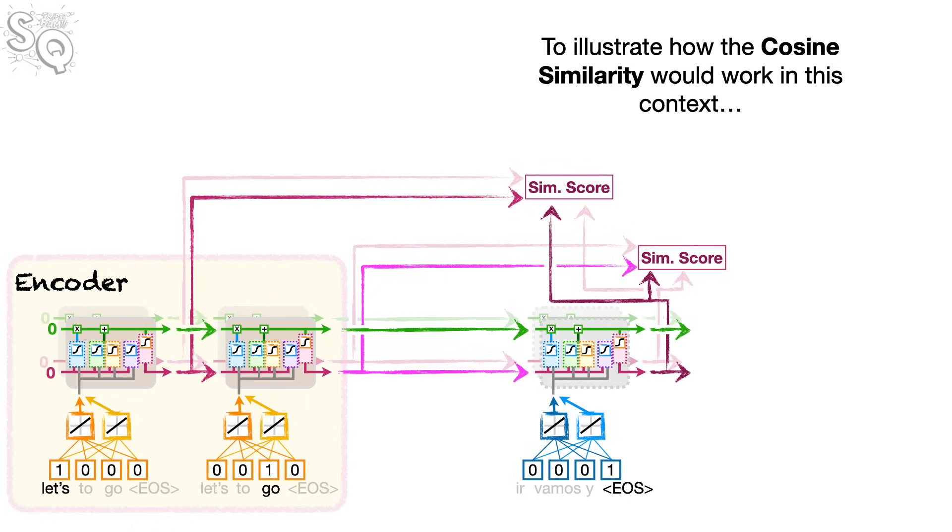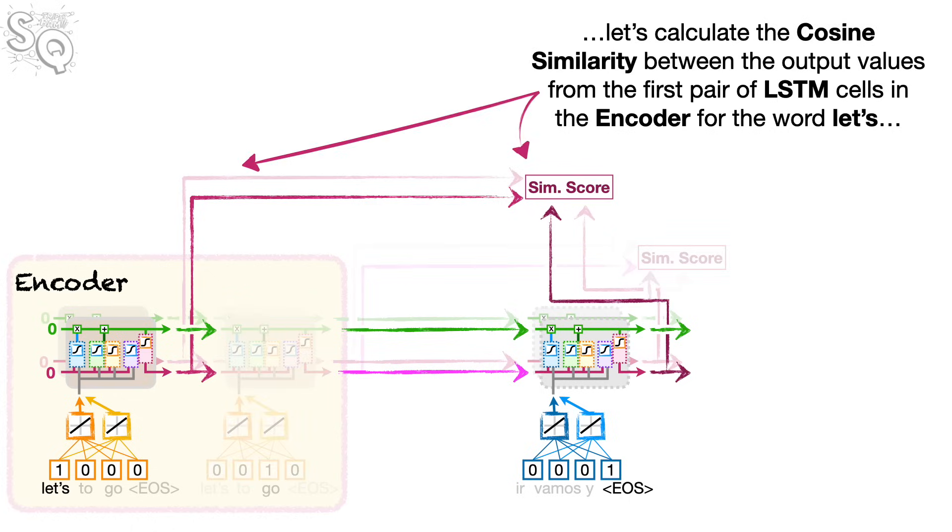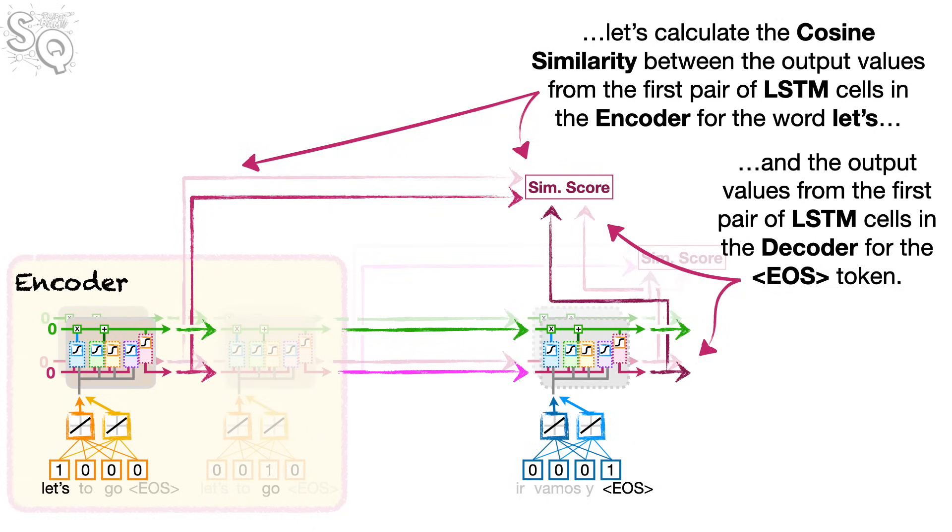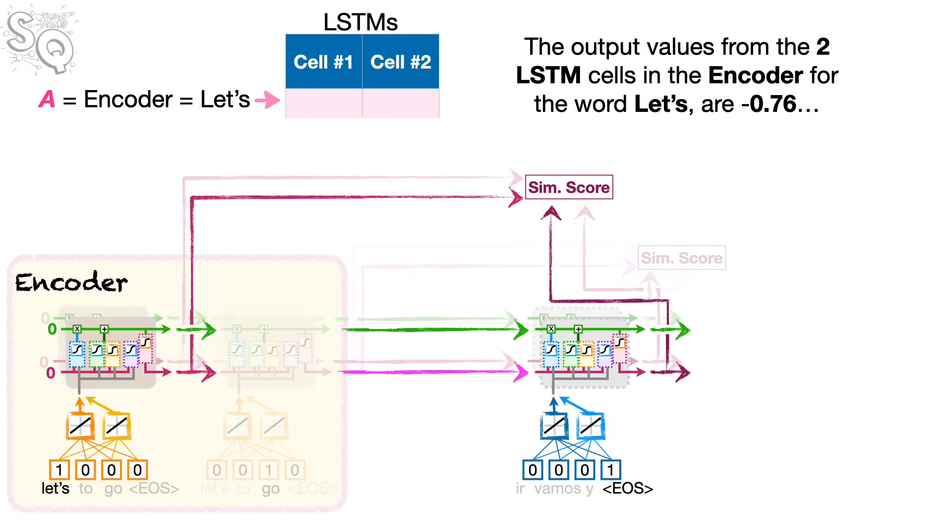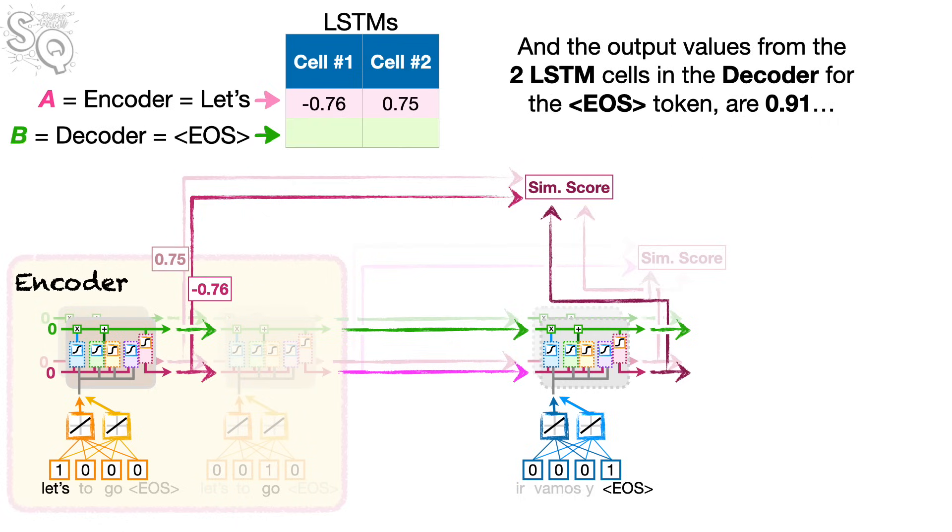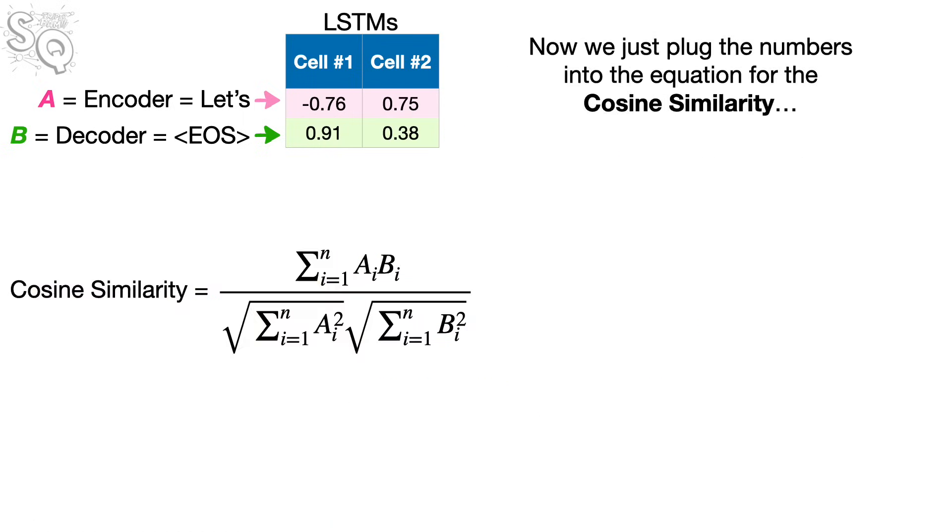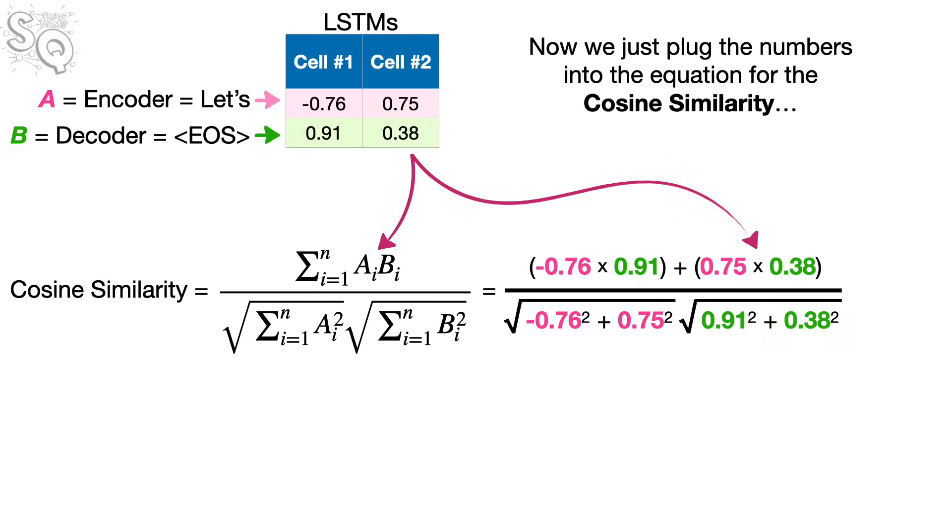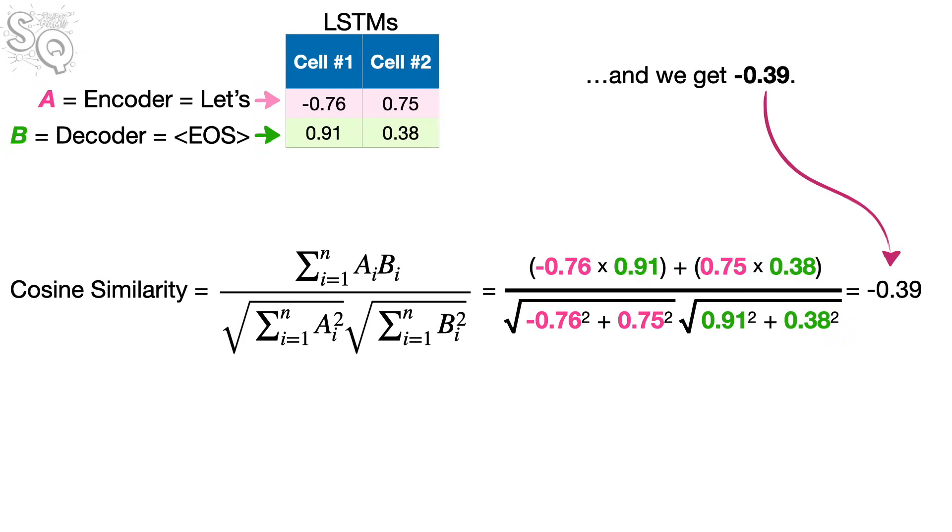To illustrate how the cosine similarity would work in this context, let's calculate the cosine similarity between the output values from the first pair of LSTM cells in the encoder for the word LETS, and the output values from the first pair of LSTM cells in the decoder for the EOS token. The output values from the two LSTM cells in the word LETS are negative 0.76 and 0.75. And the output values from the two LSTM cells in the decoder for the EOS token are 0.91 and 0.38. And now we just plug the numbers into the equation for the cosine similarity. And we get negative 0.39.